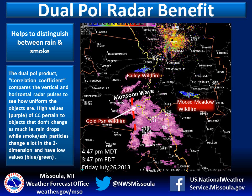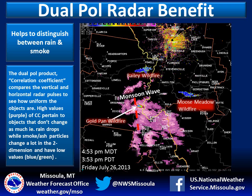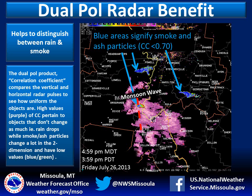Here's the Gold Pan wildfire really showing up as the wave is approaching. This radar image is six minutes later. The blue areas signify smoke and ash particles with CC values less than 0.7 — relatively low values.